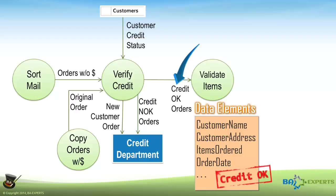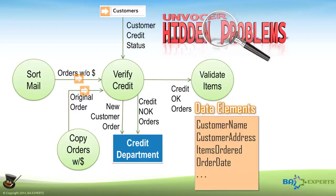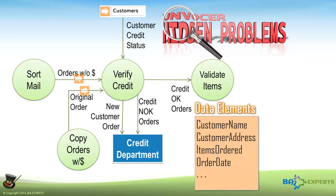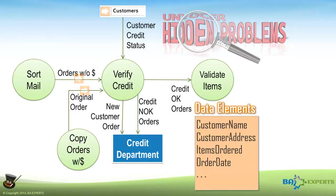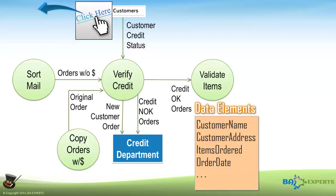To show the data elements on your data flow diagram, you can list all of them on every data flow and every data store. Whereas this level of detail is overkill for most projects, it might be very valuable to explode one or two data flows or data stores down to the elementary level to uncover hidden problems or ensure understandable requirements. You might also consider hyperlinking the data flow or the data store to a Word document listing the relevant data elements.